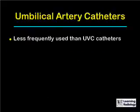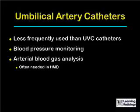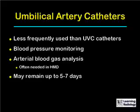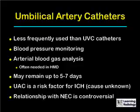Umbilical artery catheters are used less frequently than umbilical venous catheters. They are used for active blood pressure monitoring and to monitor arterial blood gases in neonates with hyaline membrane disease. They can remain for up to five to seven days, and umbilical artery catheters are a known risk factor for intracerebral hemorrhage. Their relationship with necrotizing enterocolitis is controversial.